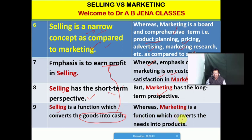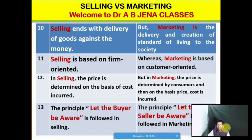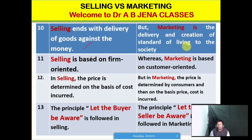Whereas marketing is a function which converts the needs, wants, and desires of the customer into products. That is why the customer will be motivated or inclined to purchase the product in order to meet their wants, desires, or needs. Marketing function is a function which converts needs into products. The next basis of comparison is: selling ends completely with delivery of goods against money. But marketing is the delivery and the creation of a standard of living to the society.